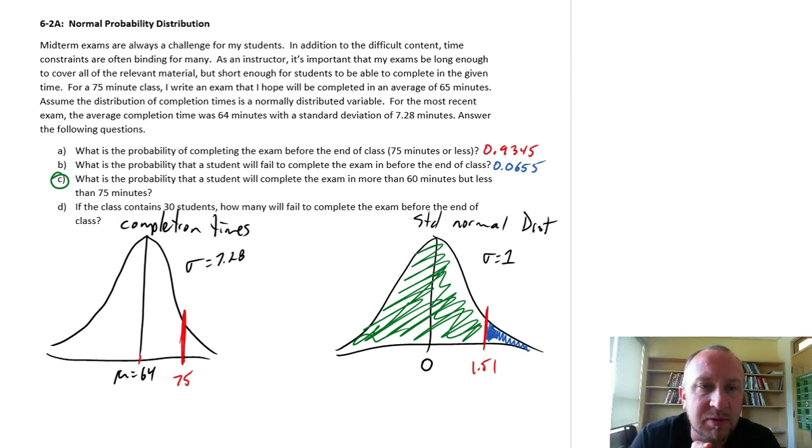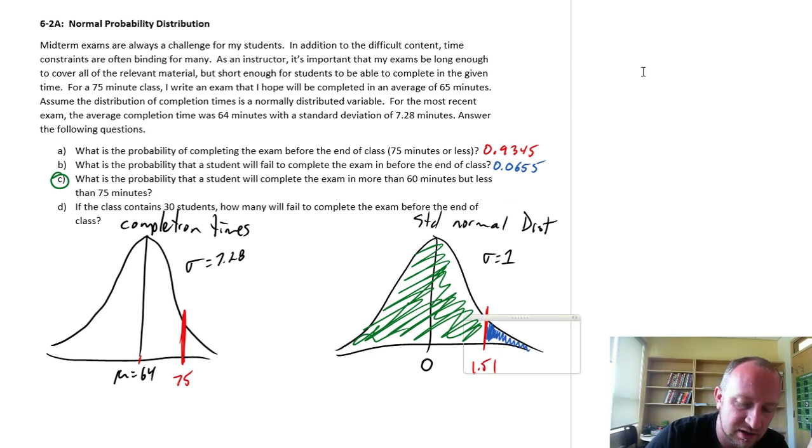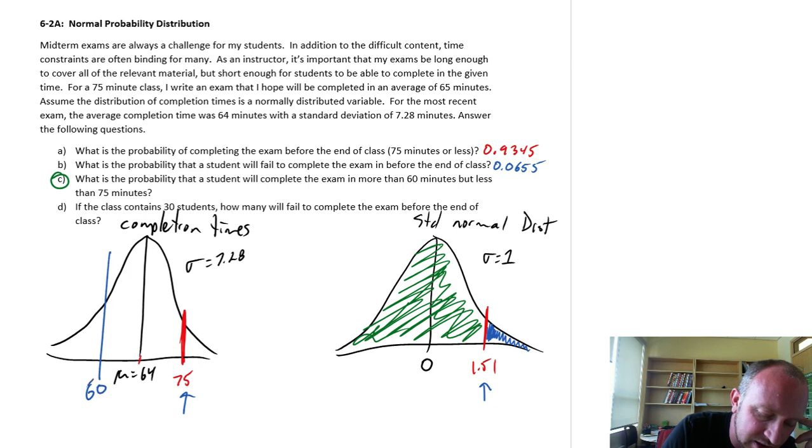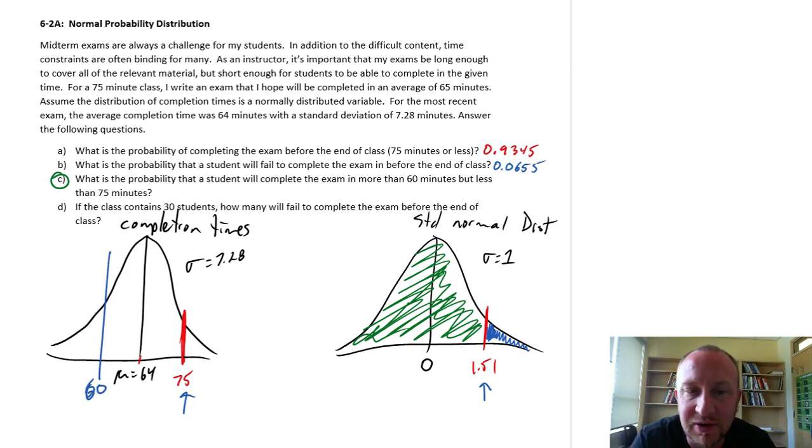The next problem now is to identify what's the probability that a student completes the exam between 60 and 75 minutes. So if I look over here at our distribution of completion time, we already have here that 75 minutes, that was the value we used for the two preceding exercises, and 151 was the corresponding Z value. What we need now is to also figure out what is the Z value that corresponds with the value of 60 for our completion time.